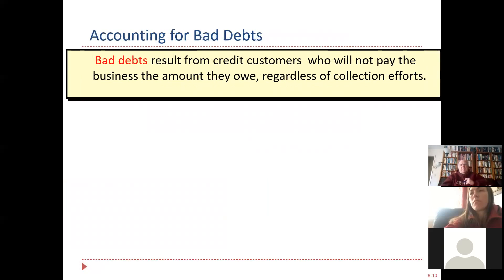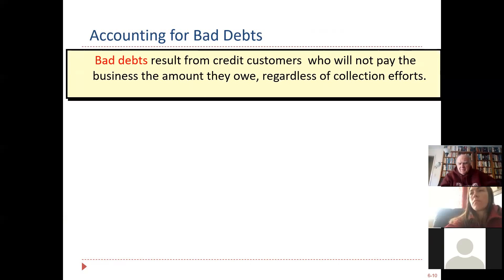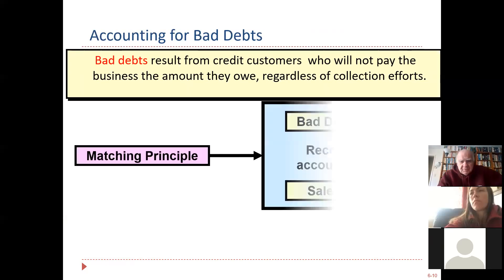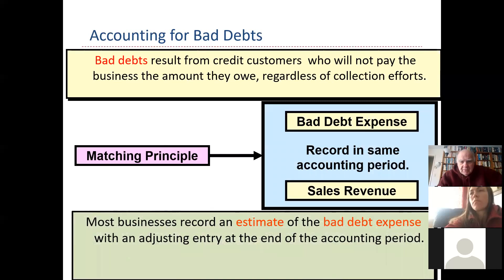Now put your thinking cap on — this is the part of the chapter that can be a little confusing at first. We have one more account called bad debts expense. Just because we billed a customer, just because we sent an invoice to a customer, there's a possibility the guy's never going to pay us.